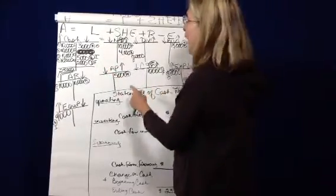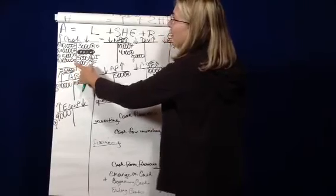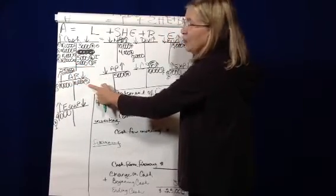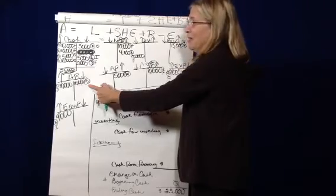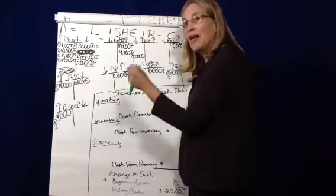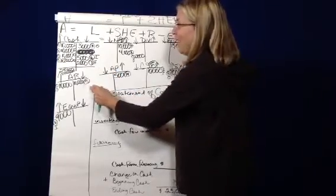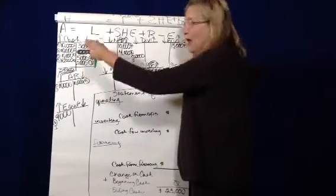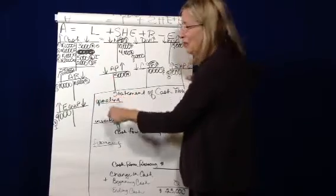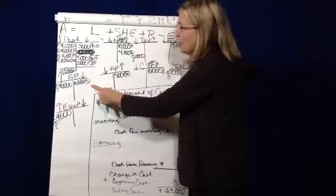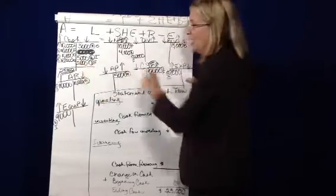Number five has to do with an increase in cash of $10,000 and a decrease in accounts receivable of $10,000. So it appears that our customers paid their bills. So if that's the case, the cash increased, and the other asset, accounts receivable, decreased. Because it has to do with a current asset, it's an operating activity.